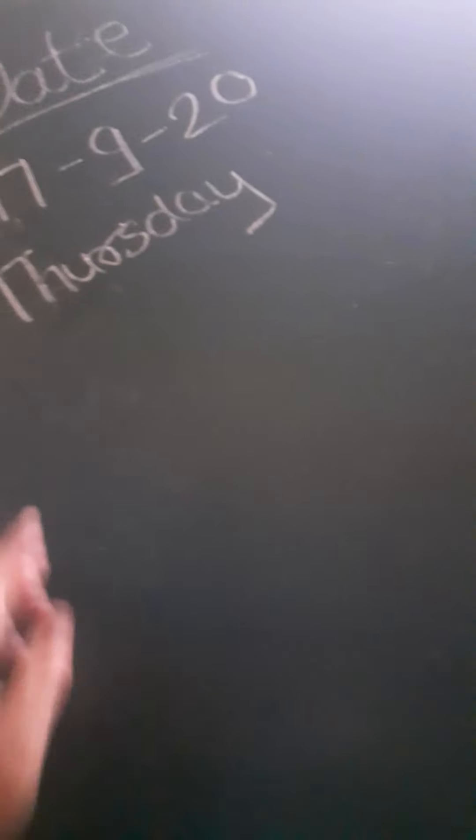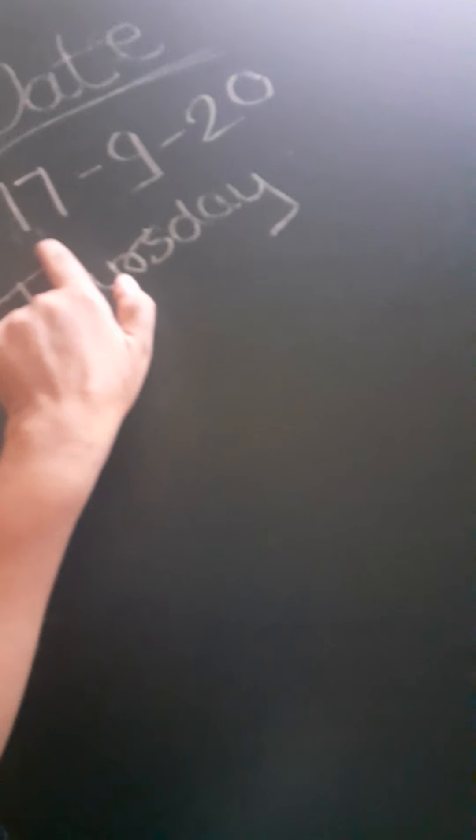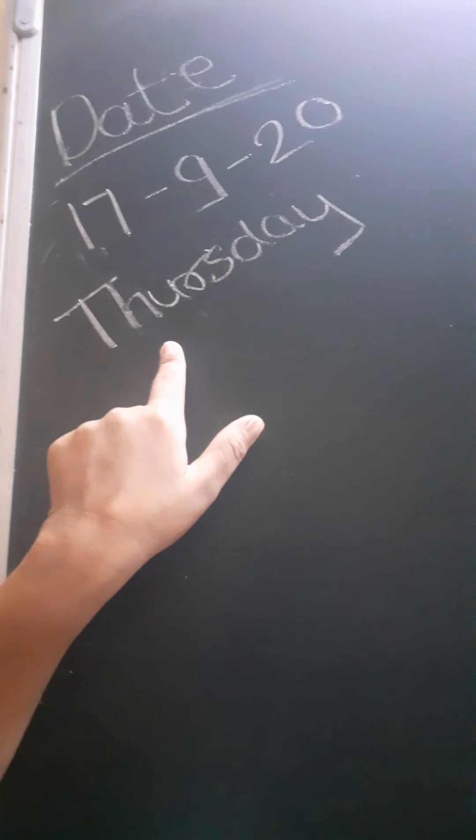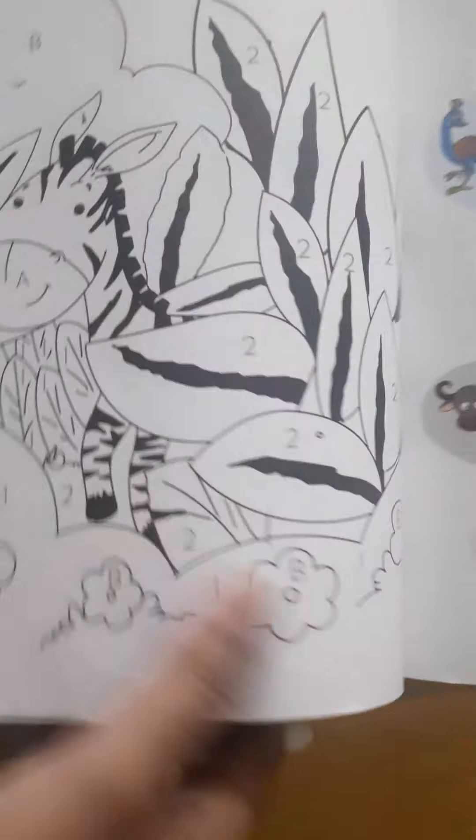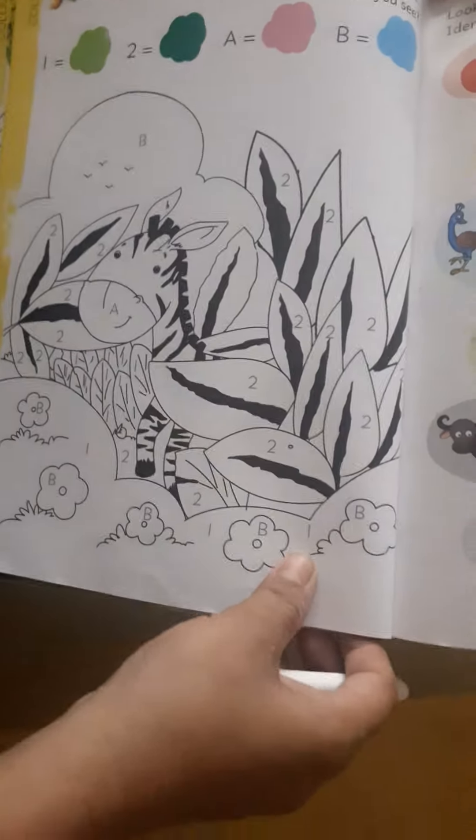Open your book. What day is it today? Today's date is 17 September 2020 and today is Thursday. Open your book, page number 14 and 15. Let's start.